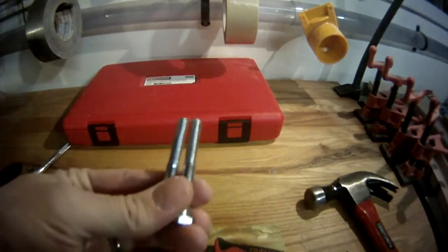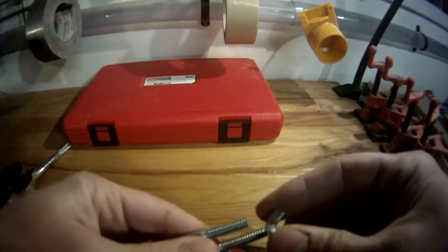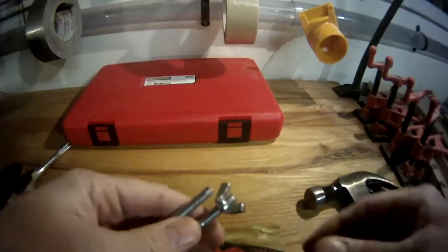So if you're considering getting a master thread restorer kit or a tap and die, if I had to make a recommendation for most people, I would just buy the tap and die set because you also get the ability to cut threads in addition to restoring threads.